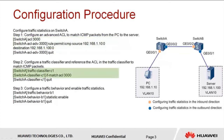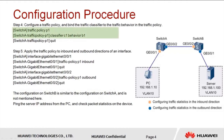Step two, configure a traffic classifier and reference the ACL in the traffic classifier to match ICMP packets. Step three, configure a traffic behavior and enable traffic statistics collection. Step four, configure a traffic policy and bind the traffic classifier to the traffic behavior in the traffic policy. Step five, apply the traffic policy to inbound and outbound directions of an interface.